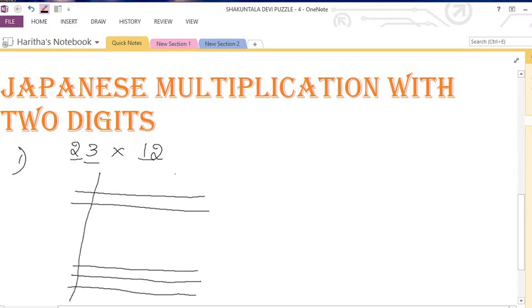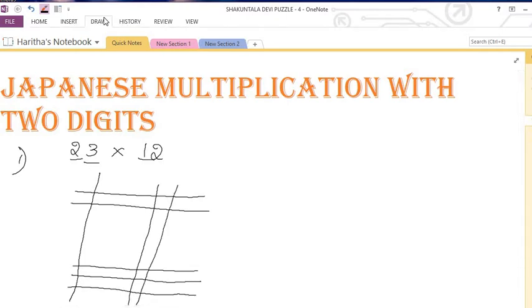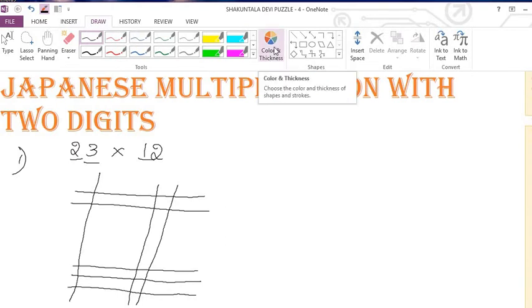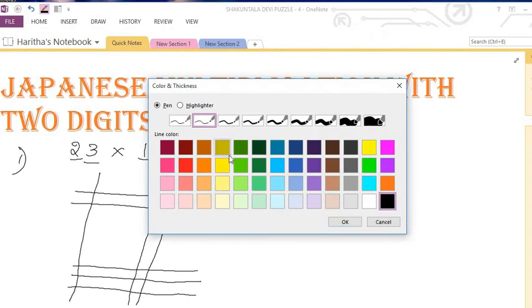And here what is that? 1. Draw a line on this. And here 2, so leave some gap and draw two lines. I am just changing the color for you to show how it is going to look. I am taking red color for this.